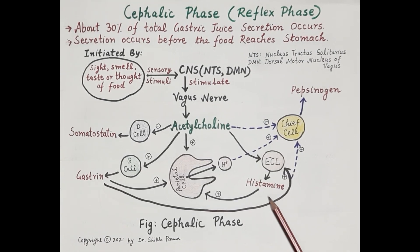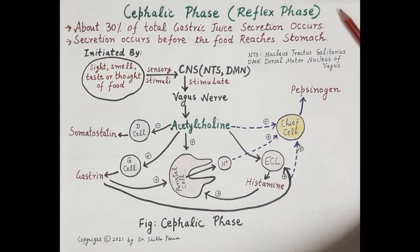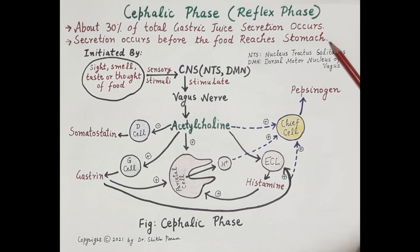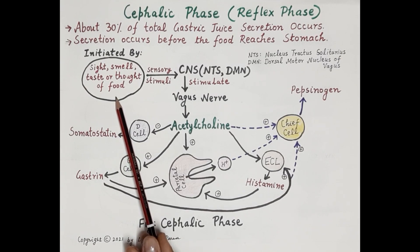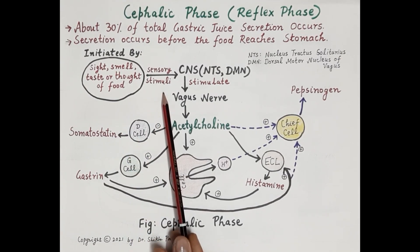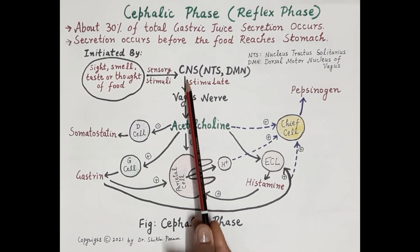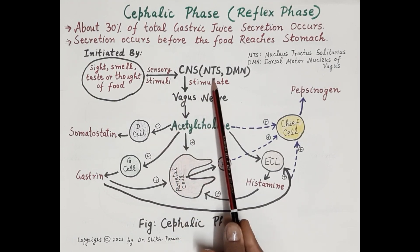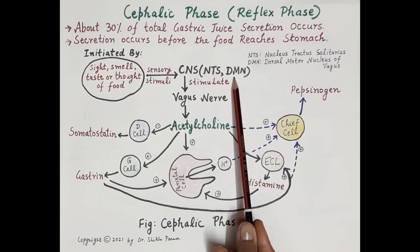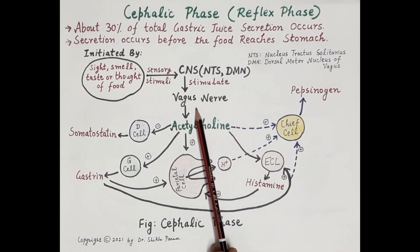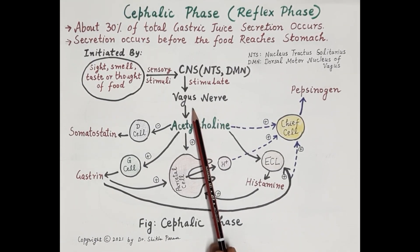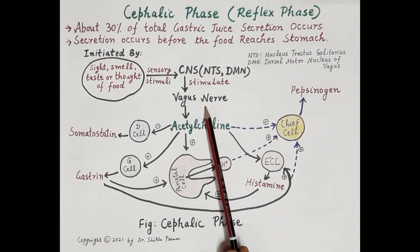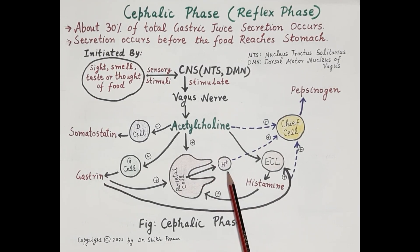Now let's discuss each phase individually, starting with the cephalic phase, also called the reflex phase. Around 30 percent of total gastric juice secretion occurs in this phase before the food reaches the stomach. Sight, smell, taste, or the thought of food are the sensory stimuli conveyed to the brain. These stimuli reach the nucleus tractus solitarius, which activates the dorsal motor nucleus of the vagus, causing stimulation of the vagus nerve — the 10th cranial parasympathetic nerve.